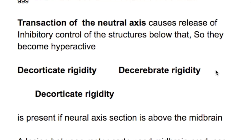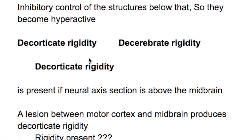In this video we'll discuss decorticate and decerebrate rigidity. Transaction of the neural axis causes release of inhibitory control of the structure below, so they become hyperactive.